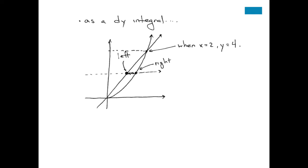Now, we also want to get all the curves in terms of y. So, we're going to take each of the equations and solve them for x in terms of y. Take a second to make sure that this makes sense. You'll notice that y equals 2x becomes x equals 1 half y. y equals x squared becomes x is equal to square root of y. So, that's our left and our right.